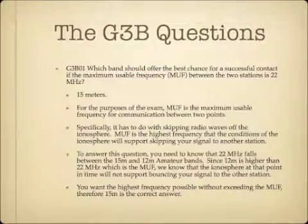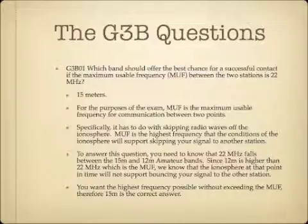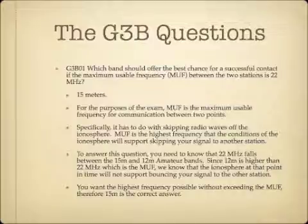Which band should offer the best chance for a successful contact if the maximum usable frequency, or MUF, between the two stations is 22 MHz? The answer is 15 meters. MUF is the maximum usable frequency for communication between two points, and it has to do with skipping radio waves off the ionosphere. MUF is the highest frequency that ionospheric conditions will support skipping your signal to another station.